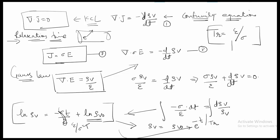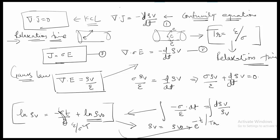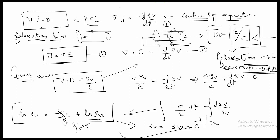This result is known as the relaxation time. It means that if charge is placed at the interior of a conductor, the electrons will move toward the surface, and the time it takes after application of the field to complete this redistribution is known as the relaxation time, also called the rearrangement time. This is the mathematical definition and derivation of the relaxation time.